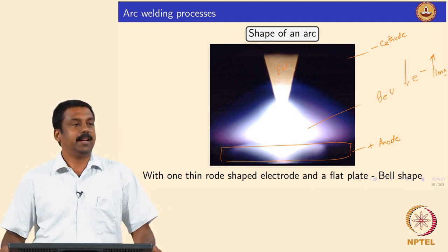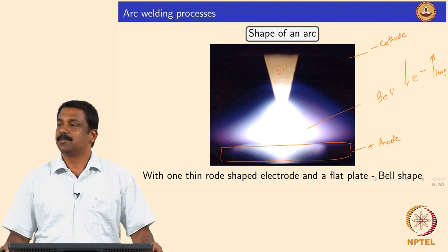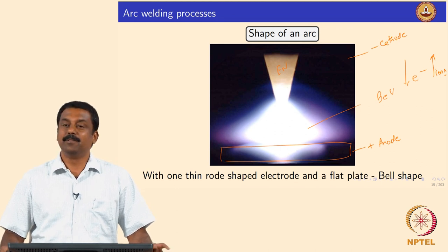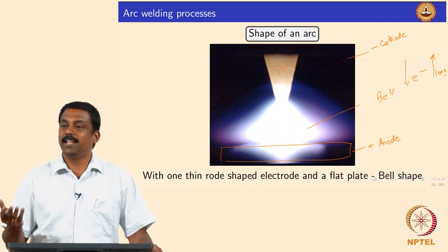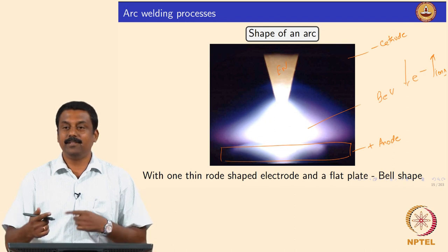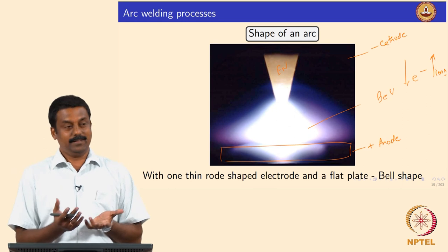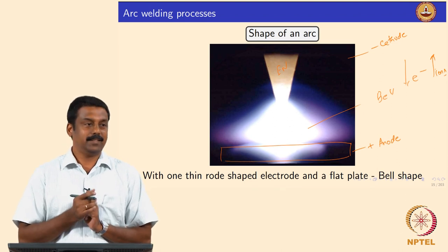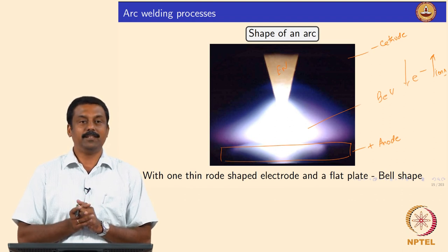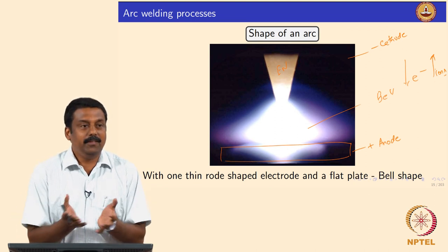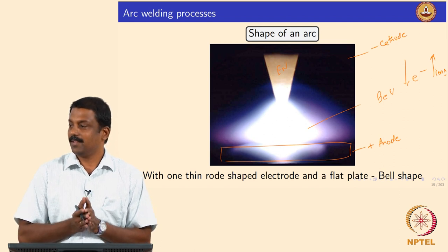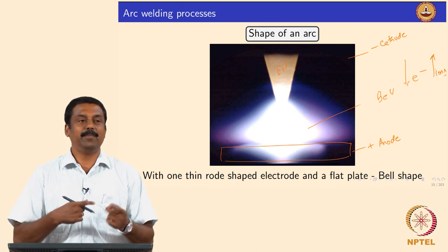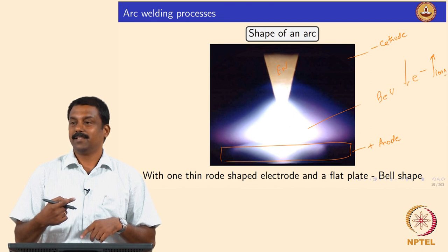If you make the workpiece negative, all the ions will reach the surface and the surface will be very clean, but you are sacrificing penetration. To increase efficiency and get both advantages — heating as well as cleaning — we use AC polarity, alternating current, where the polarity is switched each cycle. That is why for aluminium welding, we most often use alternating current: one half-cycle heats and the other half-cycle cleans.